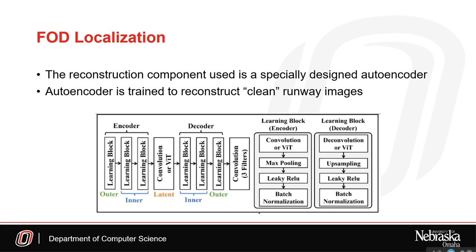The reconstruction component of the method utilizes a specifically designed autoencoder to perform its function. The clean, FOD-absent runway images are collected using the data collection framework discussed previously to train this autoencoder. Intuitively, the autoencoder must reconstruct new images such that previously unseen objects are reconstructed with a high degree of error while normal runway surfaces are reconstructed well. In order to provide this property correctly, the architecture of the autoencoder must be selected carefully. As a summary, we found a hybrid VIT and convolutional architecture performed well.